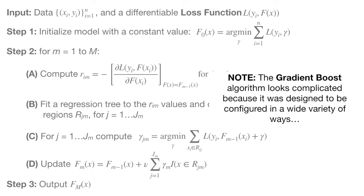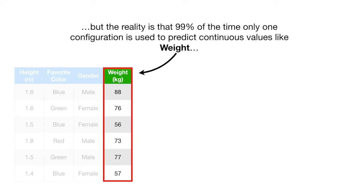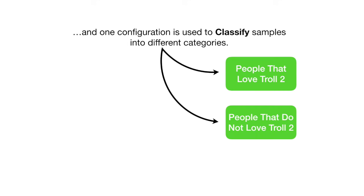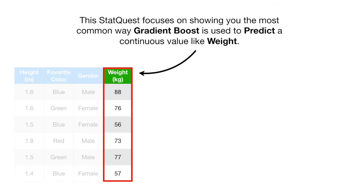Note: the Gradient Boost algorithm looks complicated because it was designed to be configured in a wide variety of ways. But the reality is that 99% of the time, only one configuration is used to predict continuous values like weight, and one configuration is used to classify samples into different categories. This StatQuest focuses on showing you the most common way Gradient Boost is used to predict a continuous value like weight.